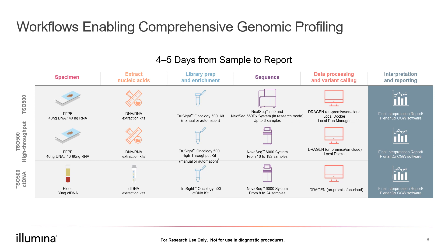Some labs choose to do library prep manually when there are only a handful of samples at a time, but there are options for automation if the lab would like less hands-on steps and potentially less variability downstream. Once libraries are completed, they will be run on the appropriate sequencer depending on the number of samples and reads necessary to interrogate the panel at the appropriate depth of coverage. The NextSeq 550 and 550DX, NextSeq 1000 and 2000, and NovaSeq 6000 are all good Illumina instrument fits for these types of assays.